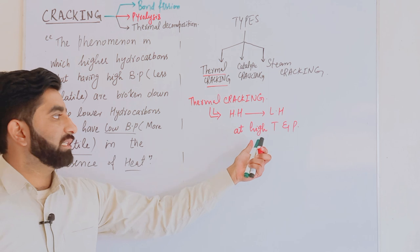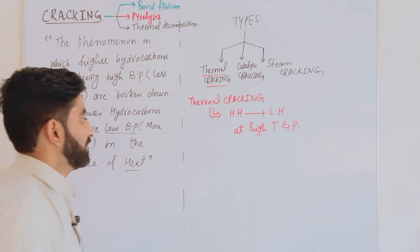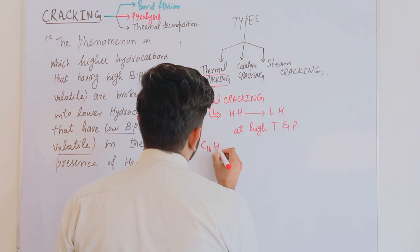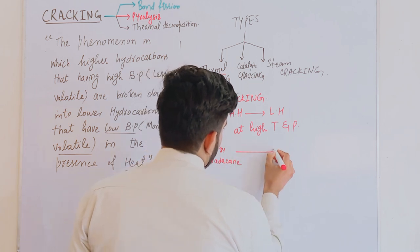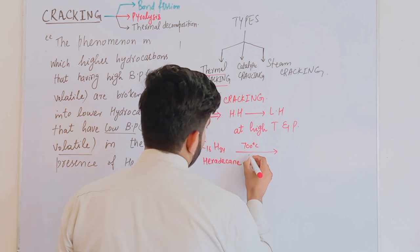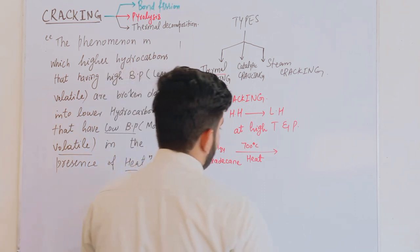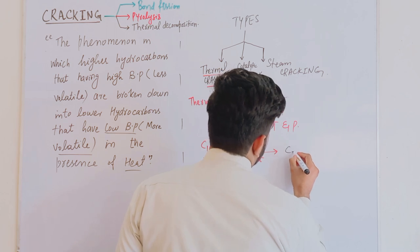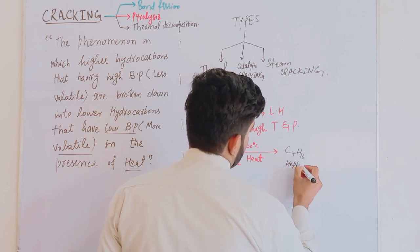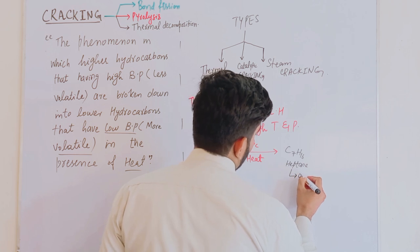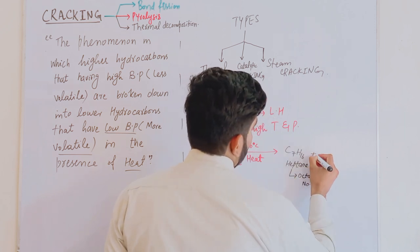In thermal cracking, the conditions are high temperature and high pressure. For example, the molecule C16H34, known as hexadecane, when heated at 700°C, is broken down into lower alkanes and alkenes. One product formed is C7H16, known as N-heptane, which has an octane number of zero, making it a very poor fuel.